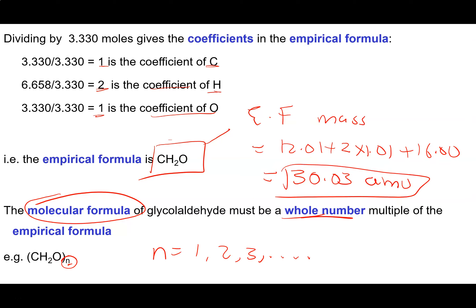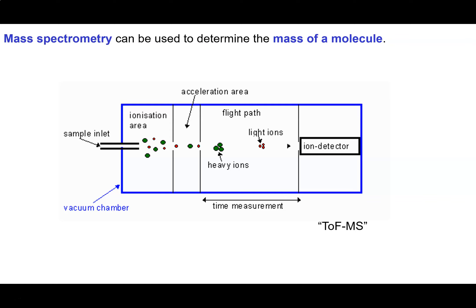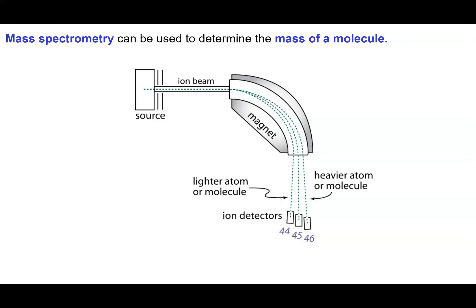One empirical formula unit has a mass of 30.03 AMU. It turns out we can measure the mass of a molecule in a couple of ways. We can measure how long it takes to travel a fixed distance when given a push — if we accelerate all molecules equally, light things travel faster than heavy things, and using standards we can figure out the mass of heavier molecules.